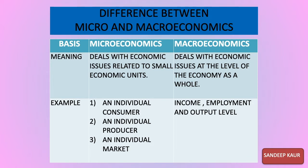Macroeconomics deals with economic issues at the economy as a whole — a nation as a whole. For example, microeconomics deals with the individual consumer problem, individual producer problem, and individual market problem. On the other side, macroeconomics deals with the income level of one nation, employment level of one nation, and the output of goods and services in one accounting year of one nation.